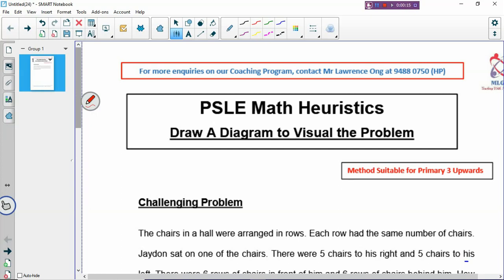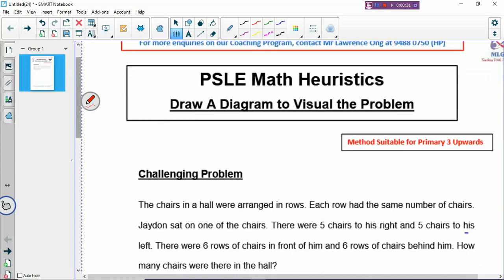For example, model drawing—that's also drawing a diagram. Sometimes when we can't draw the model, then what do we do? We may have to think of other methods, other ways to solve the problem. Another way will be to draw a diagram, which is any diagram that will suit the problem.